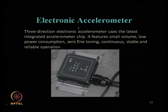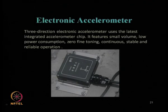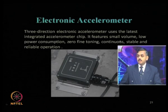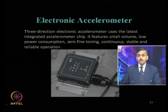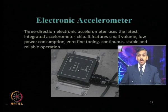Another type is the electronic accelerometer, which uses the latest integrated accelerometer chip to record all three directions — north, east, and vertical — simultaneously. It features small volume, low power consumption, zero fine-tuning, and stable, reliable operation. For these reasons, electronic accelerometers are increasingly used in recent installations.